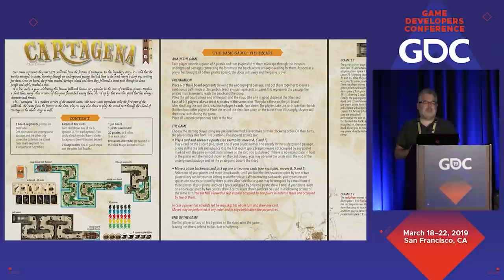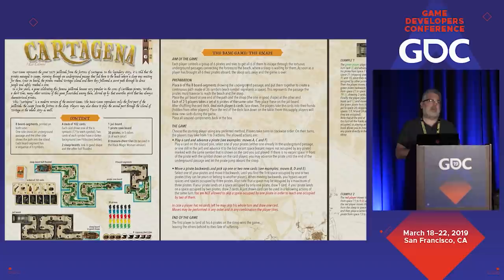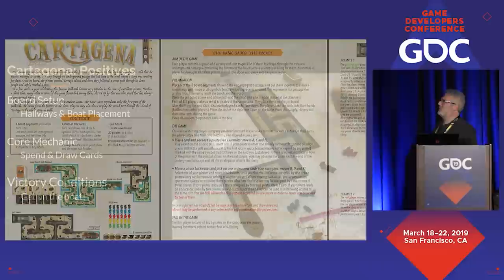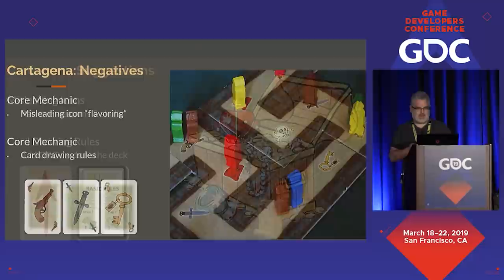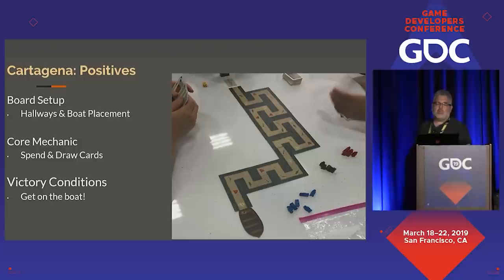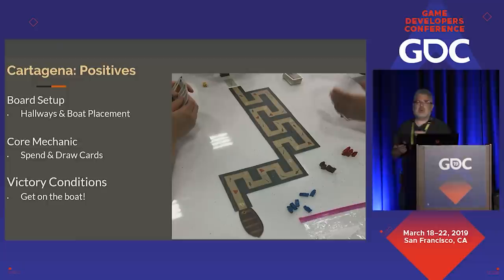Is it a great initial experience to buy a game to read a whole bunch of rules? When I put Cartagena through these groups, some positives emerged: board setup was super intuitive — they have puzzle pieces that fit together nicely, people figured that out quickly. They figured out there's some sort of maze aspect, you start at one end, and you want to get to the boat because that's how you escape. One person held cards and said okay, we'll deal out some cards, spend cards to move our pieces around, and figure out how to draw cards to replenish our hand. Victory conditions: get on the boat.